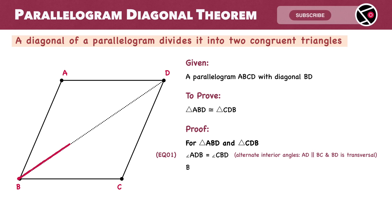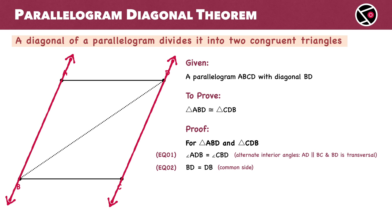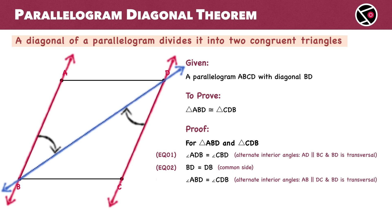Now, BD equals BD — they are the same side. This is equation 2. Going back to the primary property of parallelograms, we know that opposite sides AB and DC are parallel. Now, with BD as the transversal, alternate interior angles — angle ABD and angle CDB — are equal. This is equation 3.